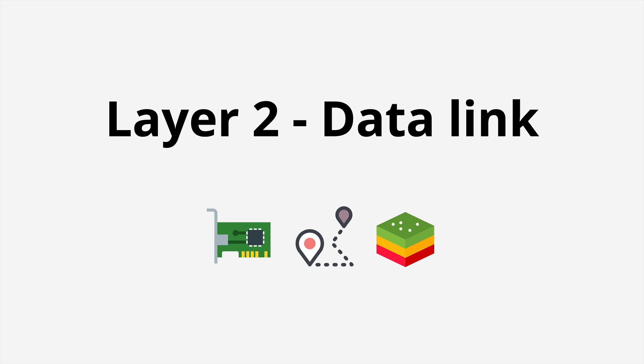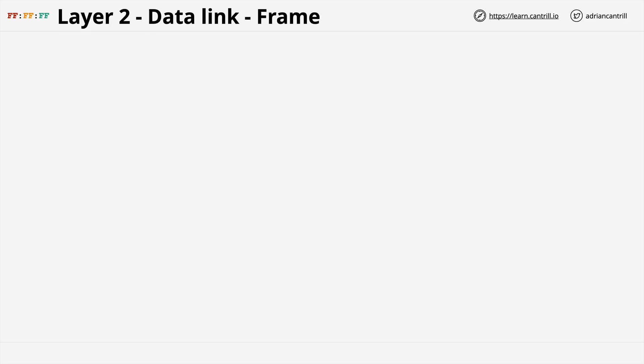Everything above this point relies on the device-to-device communication which the data link layer provides. So when you're sending or receiving data to or from the internet, just be aware that the data link layer is supporting the transfer of that data. This is going to be one of the longer parts of this lesson series, because layer 2 actually provides a significant amount of functionality.